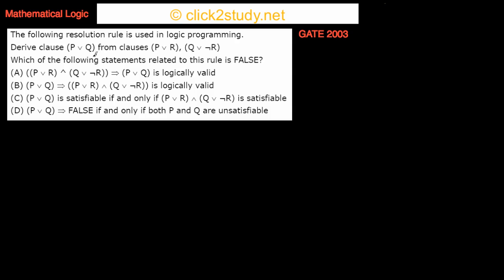The following resolution rule is used in logic programming: derive clause P or Q from clauses P or R, and Q or not R. This is the resolution principle. The question asks which of the following four statements related to this rule is false.